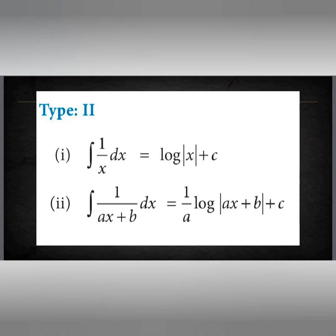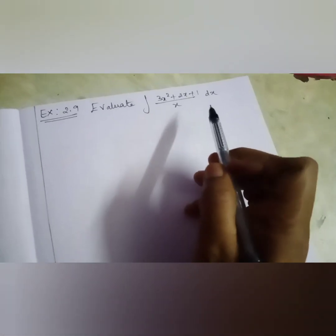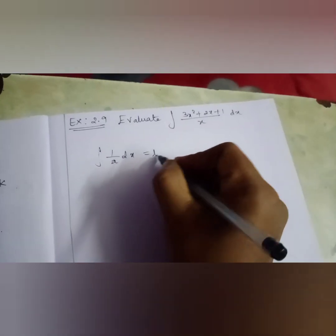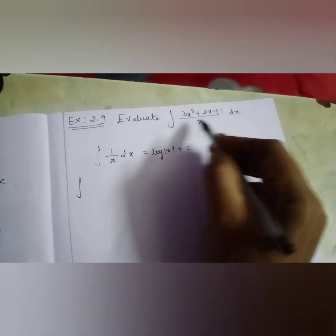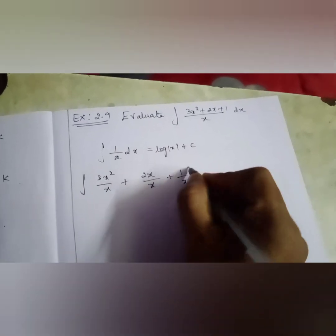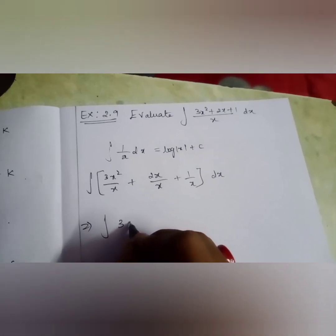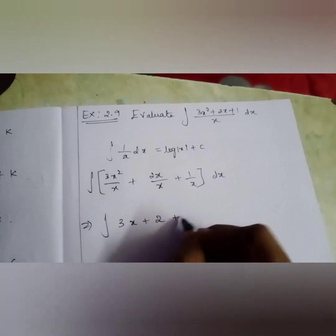Now we will see Type 2: ∫(1/x)dx = log x + c, and ∫1/(ax+b) dx = (1/a) log|ax+b| + c. We will see example 2.9: evaluate ∫(3x² + 2x + 1)/x dx. For this we use the Type 2 first formula. Splitting the expression gives ∫(3x²/x + 2x/x + 1/x) dx = ∫(3x + 2 + 1/x) dx.